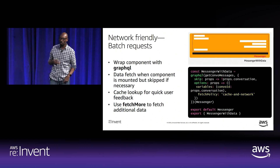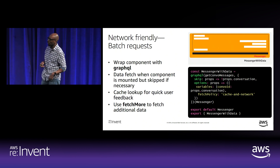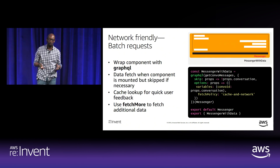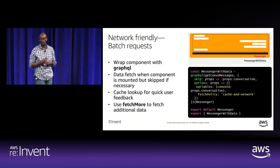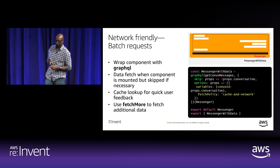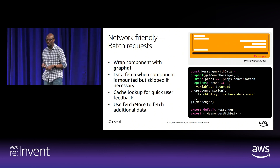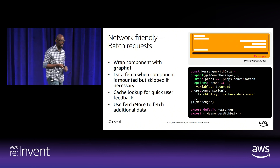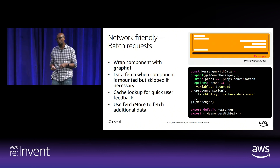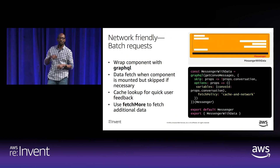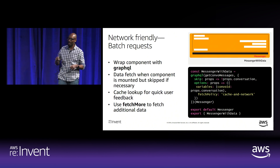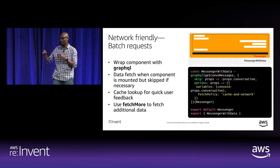To make our application network-friendly, we use batch requests. Every time we load a conversation, we batch request a number of messages. This is easily done in our Messenger component wrapped in a higher-order component. Anytime we load a new conversation, we fetch a new set of messages using the conversation ID as the main variable. When we scroll back, we can use a fetchMore function available from the client to fetch additional messages. Because we're using DynamoDB, we use a nextToken returned from every query that points DynamoDB to where the next set of messages should be retrieved from.